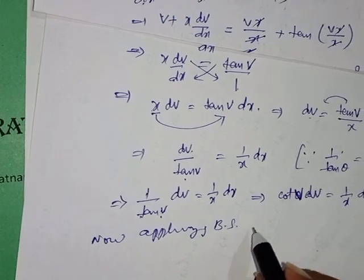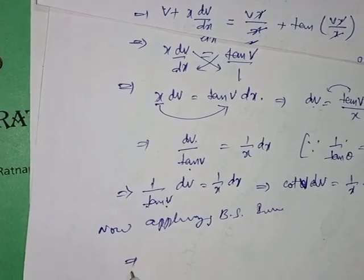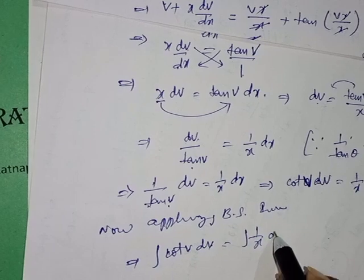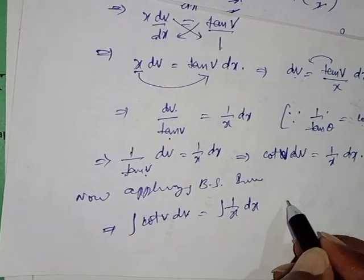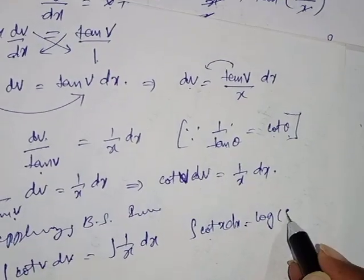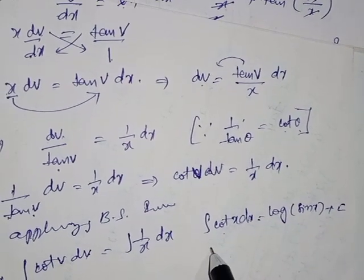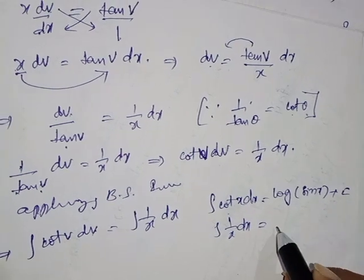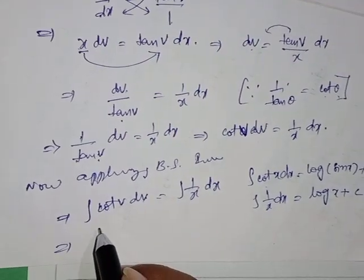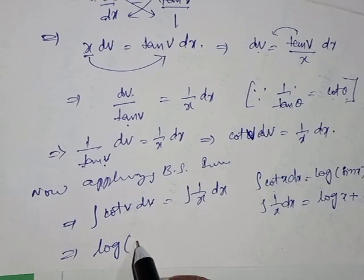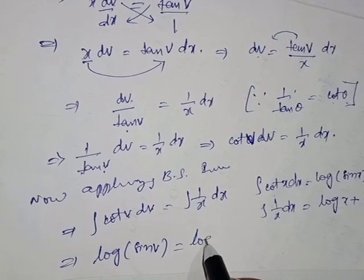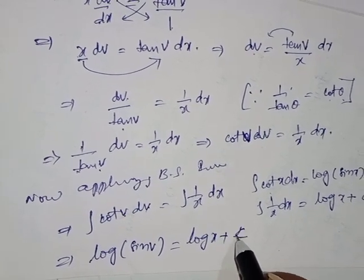Applying integration on both sides: ∫cot(v)·dv = ∫(1/x)·dx. We know ∫cot(x)·dx = log|sin(x)| + C, and ∫(1/x)·dx = log|x| + C. So log|sin(v)| = log|x| + C.